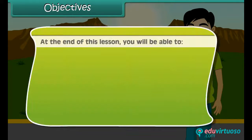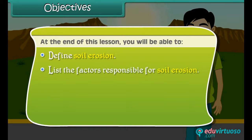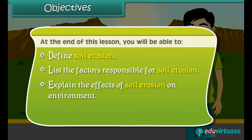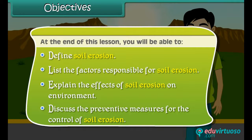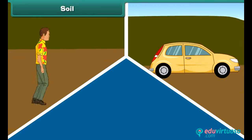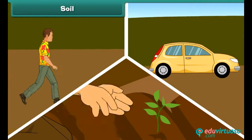Objectives: At the end of this lesson, you'll be able to define soil erosion, list the factors responsible for soil erosion, explain the effects of soil erosion on the environment, and discuss the preventive measures for the control of soil erosion.